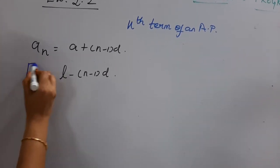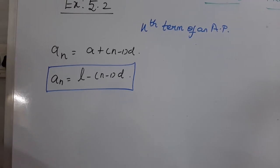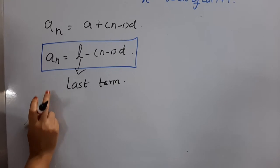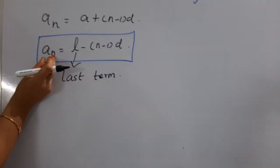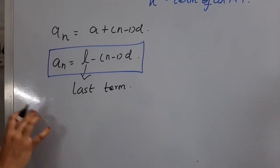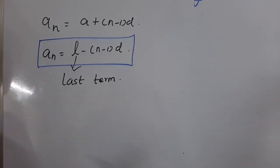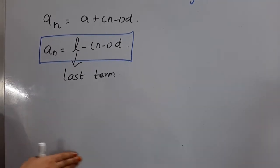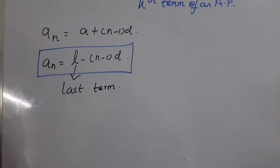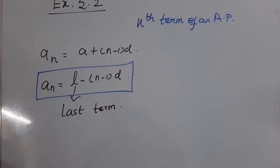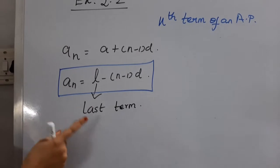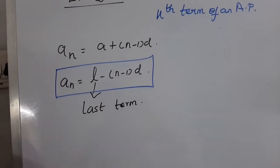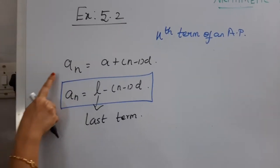What is the second formula? What about L? L is the last term. This is also a formula for finding AN. We will use this formula when the question asks you to find a particular term from the last of the series. If a finite series is given — where the number of terms is countable and terminates — that is a finite series. An infinite series is one where the number of terms is uncountable and we do not know N.